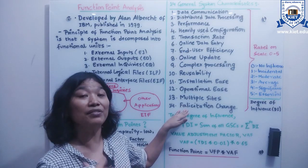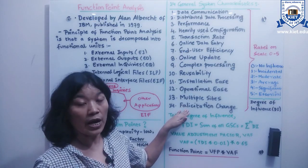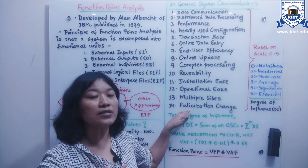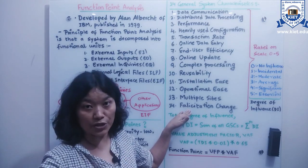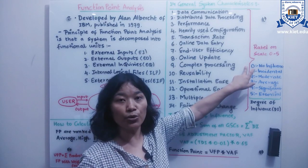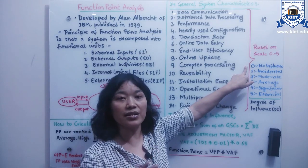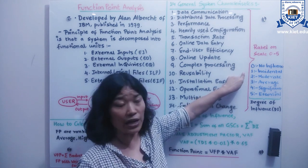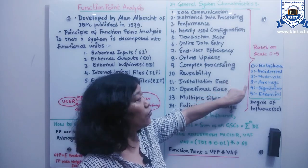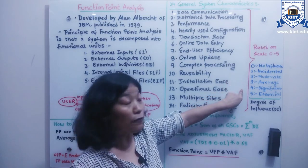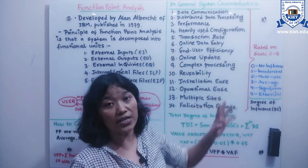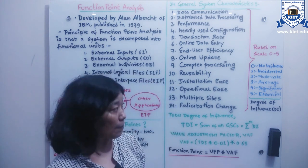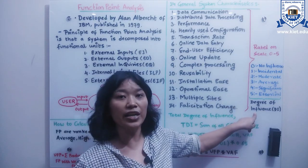These 14 characteristics can be ranked on a scale of 0 to 5, based on how they affect or influence the software application. A value of 0 means no influence; 1 means incidental influence; 2 means moderate influence; 3 means average influence; 4 means significant influence; and 5 means essential influence — meaning it has a high effect on the software. These are called the degree of influence.